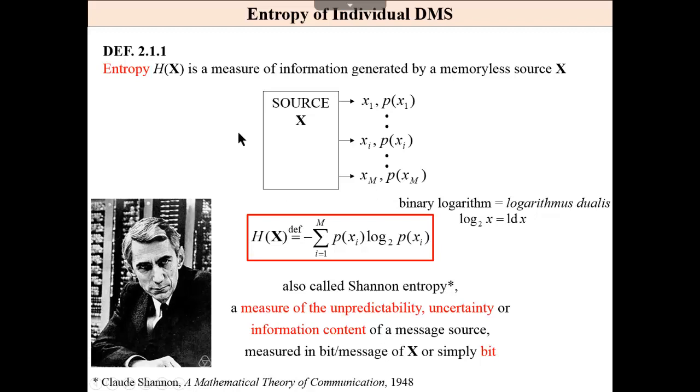So this is entropy of the discrete memory source, measure of unpredictability, uncertainty, information content.